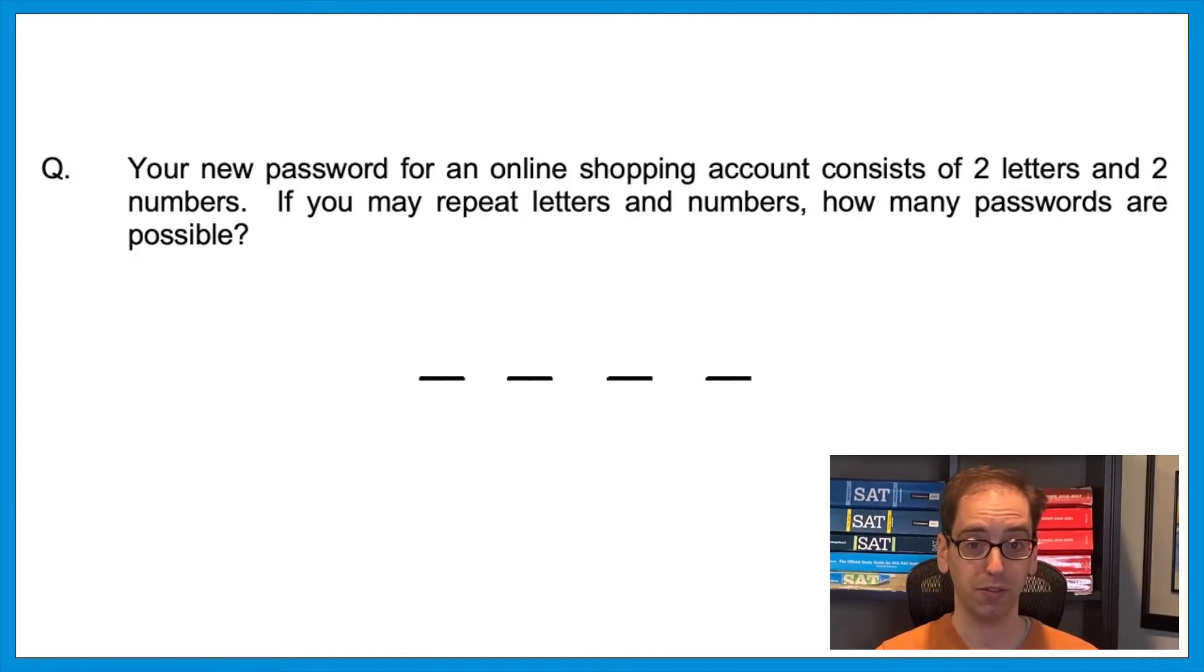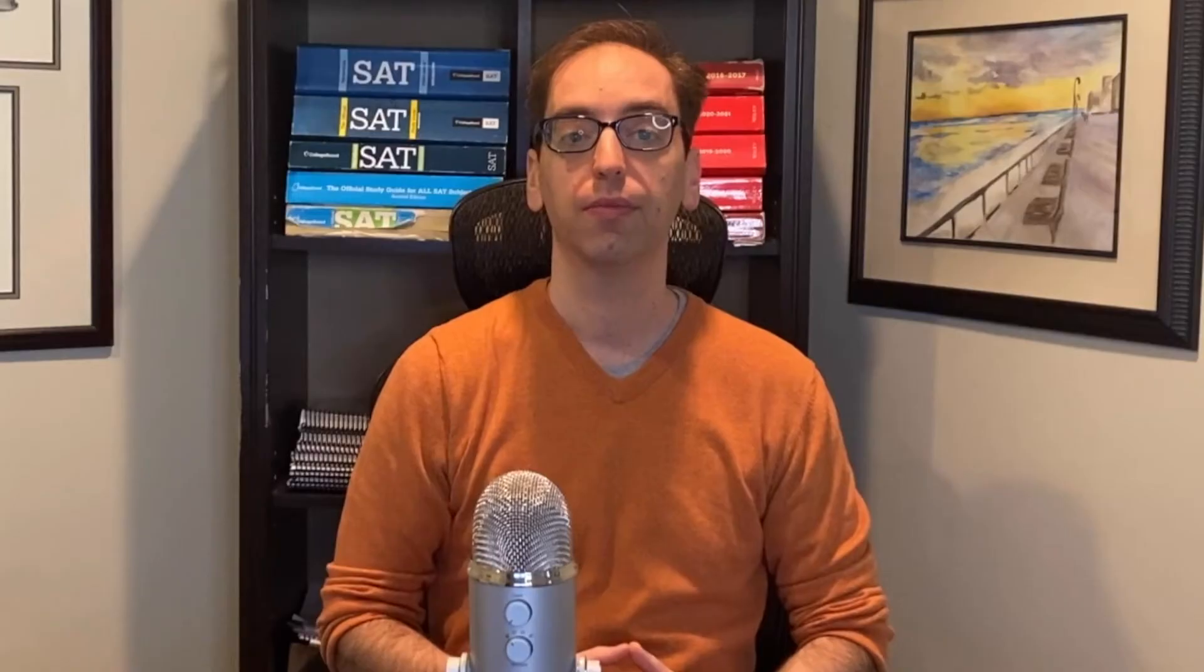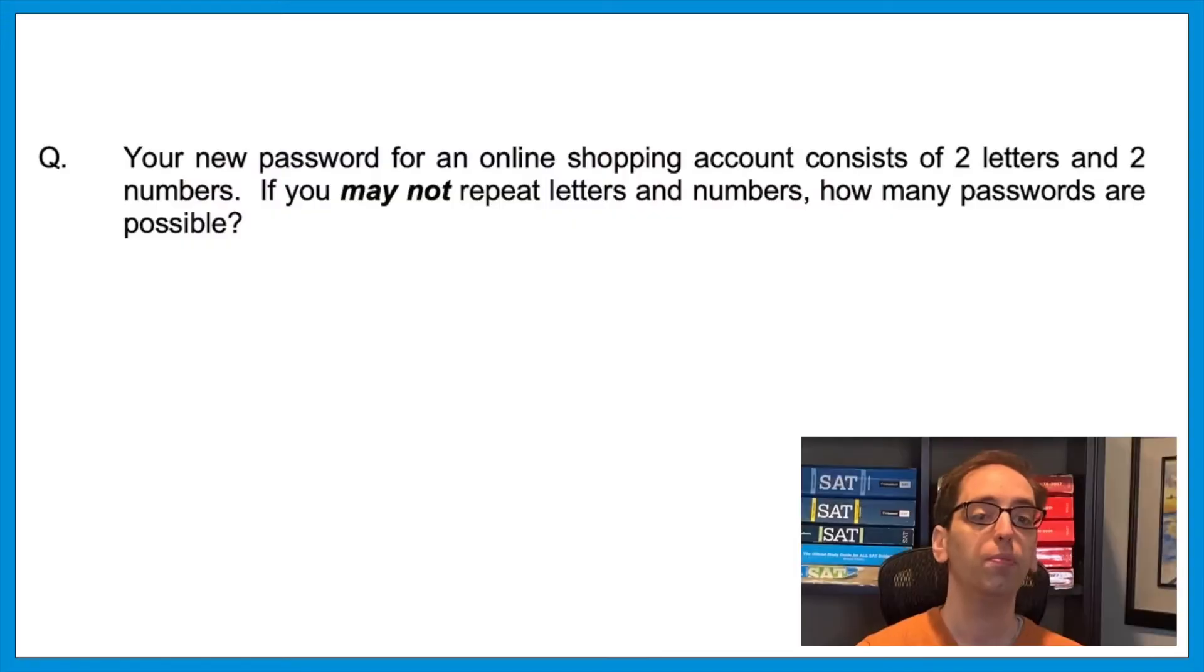So, we have 26 letters and 10 digits. What would go in each spot? For the first two letters, it would be 26 and 26. And then, for the digits, 10 and 10. The final answer is 26 times 26 times 10 times 10. And just like that trigonometry question, they don't want a numeric answer. The answer might be listed as just 26 26 10 10. It's all about multiplying the possibilities. But now let's look at a variation where they give you a restriction. Your new password for an online shopping account consists of two letters and two numbers. If you may not repeat letters and numbers, how many passwords are possible? Notice that word here, may not repeat. I'll give you a minute. Press pause. Give it a shot.